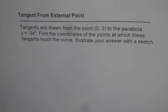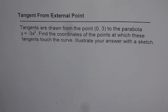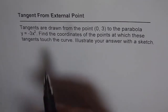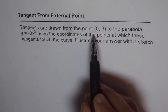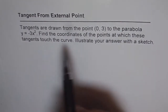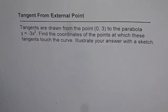Here is a test problem for you. I'd like you to copy the question, pause the video, find the solution, and then look into my suggestion. The question is: tangent from external point. Tangents are drawn from the point (0, 3) to the parabola y equals minus 3x squared. Find the coordinates of the points at which these tangents touch the curve, and illustrate your answer with a sketch.